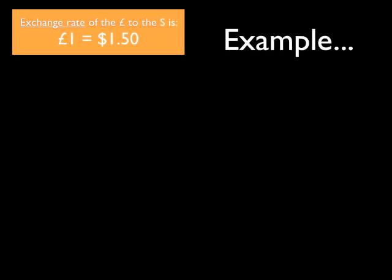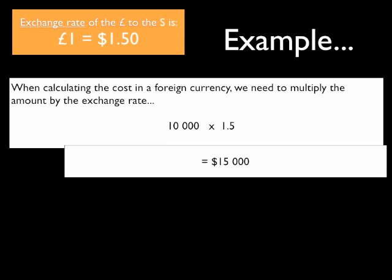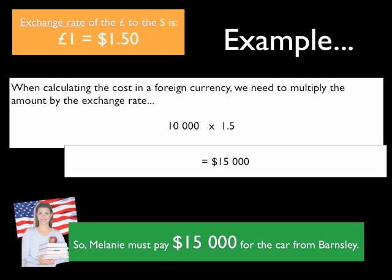Let's have a look at a worked example. When calculating the cost in a foreign currency, we need to multiply the amount — the price — by the exchange rate. The price of the car is £10,000 and the exchange rate to the pound is $1.50, so a simple multiplication tells us the answer is $15,000. Melanie must pay $15,000 to buy the car from Barnsley.